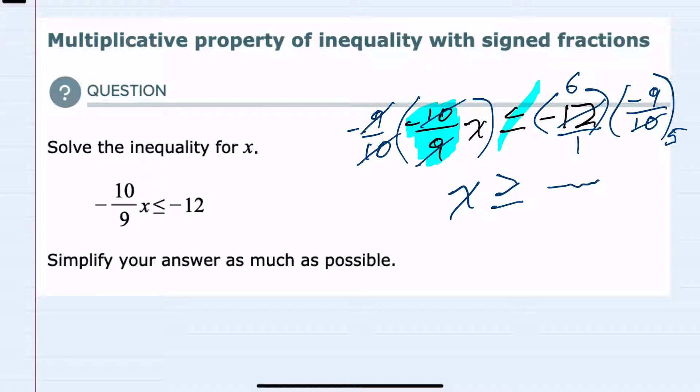So in the numerator, a negative 6 times a negative 9 would be a positive 54, and in the denominator, a 1 times 5 would just be 5. Since that fraction will no longer simplify, this would be our solution simplified as much as possible.